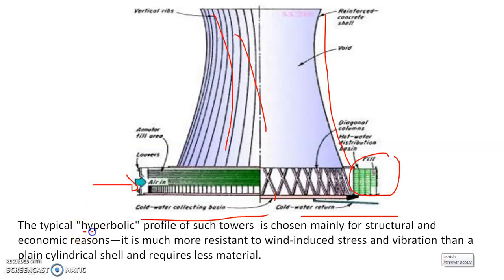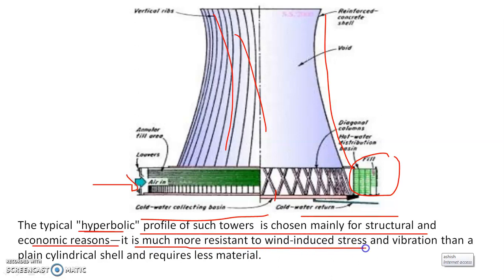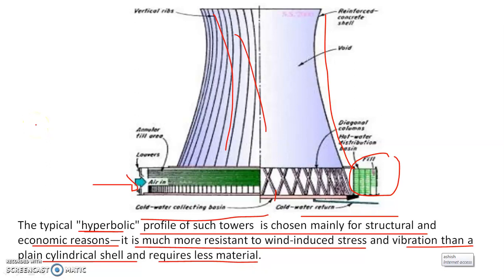The typical hyperbolic profile of such a tower is chosen mainly for structural and economic reasons. It is much more resistant to wind-induced stresses and vibration than a plain cylindrical shell, and requires less material. This is why the hyperbolic form is used rather than a parabola or other shape.